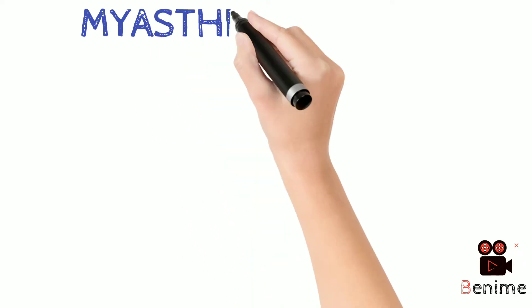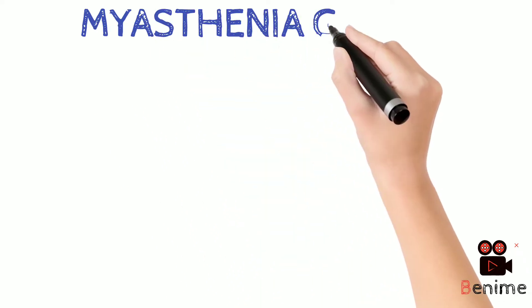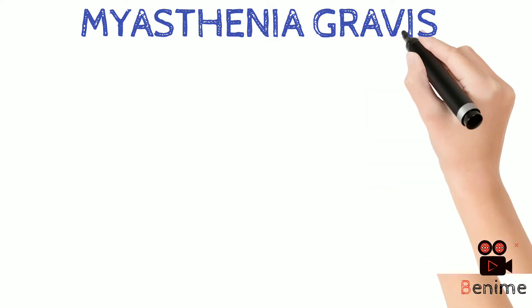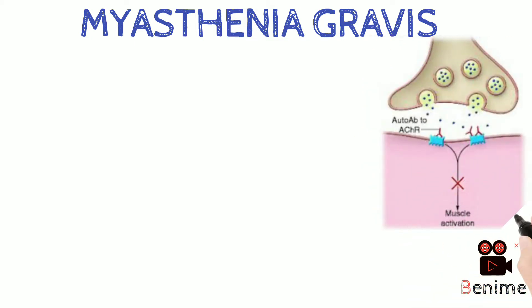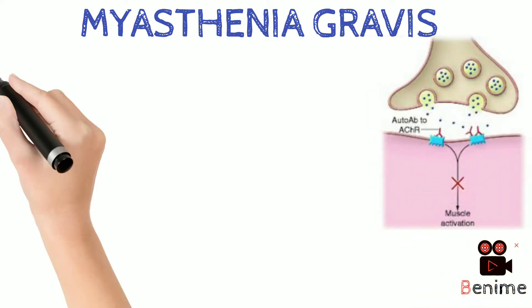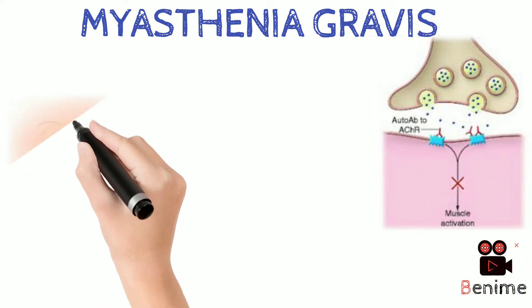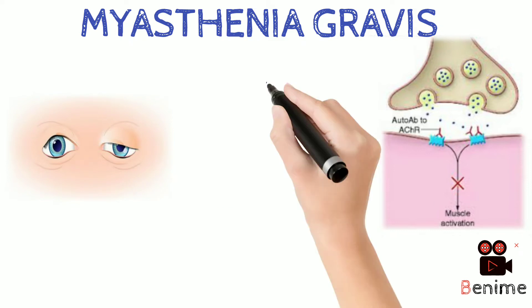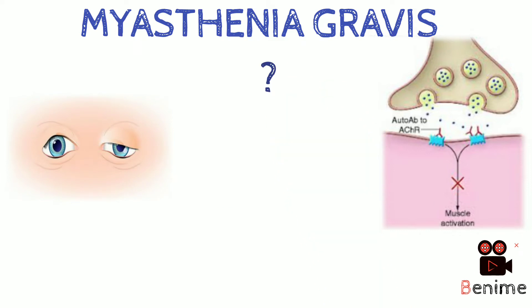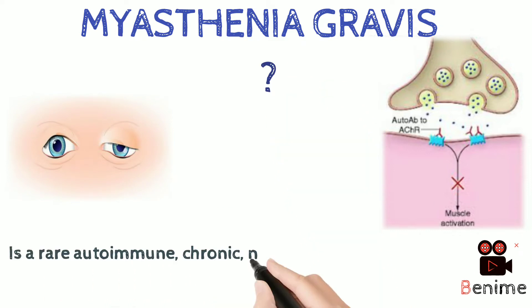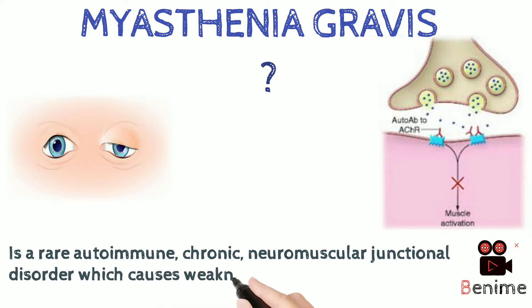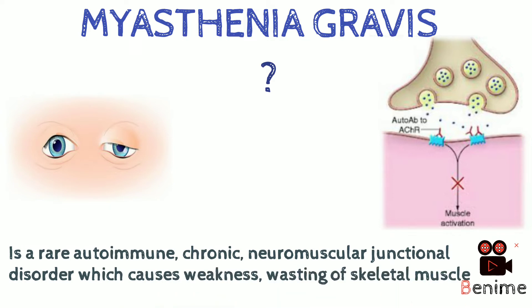Hello there everyone, this is 5 Minutes Medicine and today we will talk about myasthenia gravis, which literally means grave muscle weakness, and can be understood as an autoimmune neuromuscular junction disorder which causes weakness and wasting of skeletal muscles.